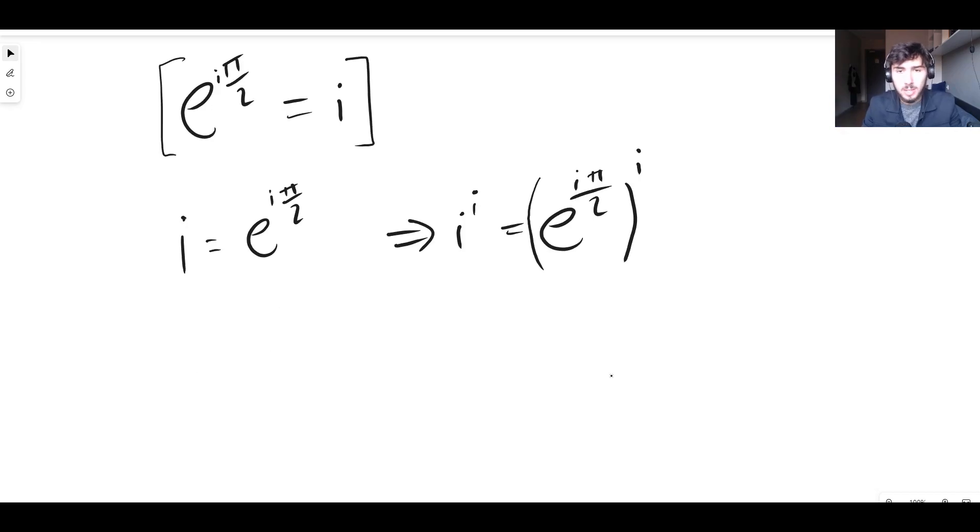And we can use that information to say that then i to the i is equal to, using this right here, looking at the right hand side again, we can multiply the powers. So e to the i pi on two multiplied by i, that's the same thing as i to the i.